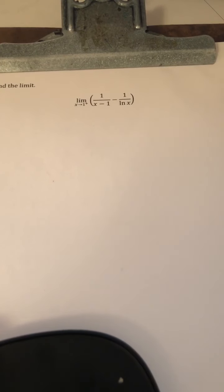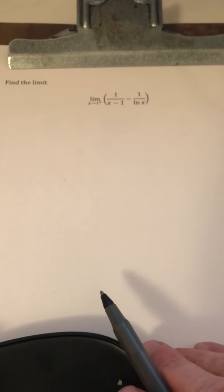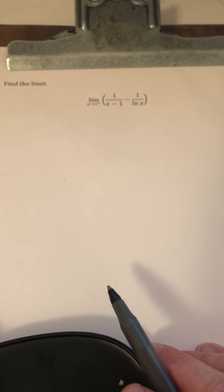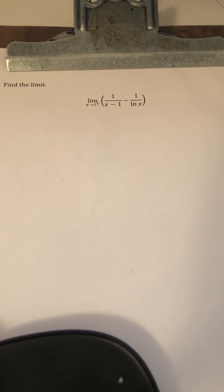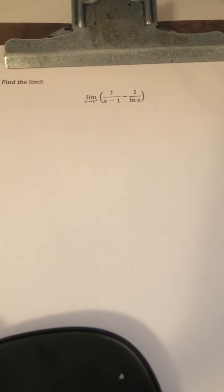Let's do another problem from section 4.4, which is L'Hopital's rule. So we have the limit as x approaches 1 from the right of 1 over x minus 1 minus 1 over natural log of x.